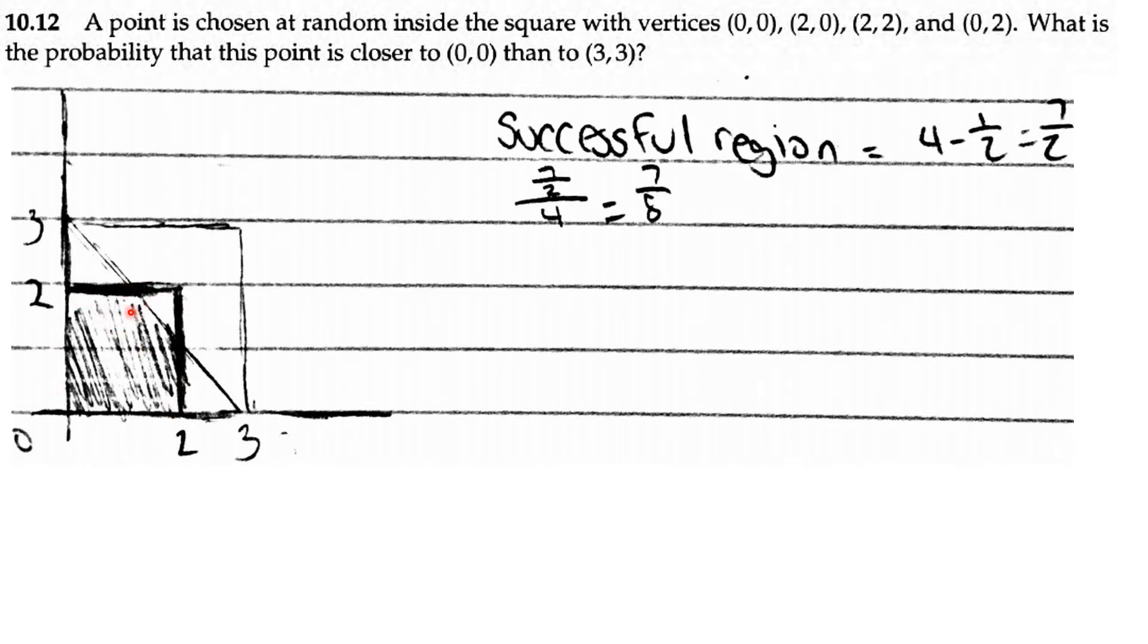So the successful region inside the square is 4 minus one-half, which is 7/2. So since the total area is 4, the probability of the point being in here is 7/2 over 4, which is 7/8.